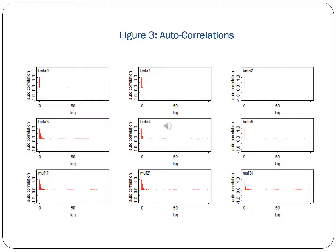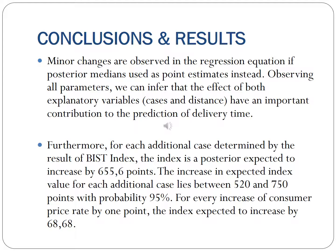The two-year evaluation made here can be expanded and examined in a wider range of different studies. Minor changes are observed in the regression equation if posterior medians are used as point estimates instead. Observing all parameters, we can infer that the effect of both explanatory variables — cases and distance — have an important contribution to the prediction of delivery time. All summary statistics and posterior densities indicate that 0 is far away from the posterior distribution, with posterior probability of having a positive association between each xj and y equal to 1. For each additional case determined by the results of the BIST 100 index, the index is expected to increase by 655.6 points. The increase in expected index value for each additional case lies between 520 and 750 points with probability 95%.